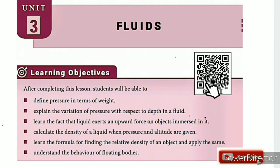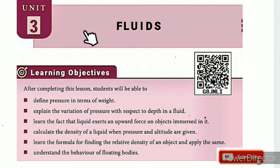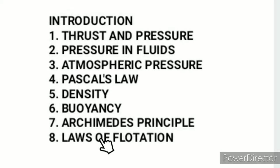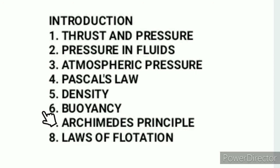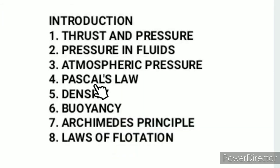This QR code link leads to the ICT corner. In this unit guide, you will be able to check out the questions across 8 topics. The first topic is Thrust and Pressure, the second is Pressure in Fluid, third is Atmospheric Pressure, fourth is Pascal's Law, fifth is Density, and sixth is Buoyancy. Topics 1 to 6 each have one video. Now we reach the 7th topic: Archimedes Principle.